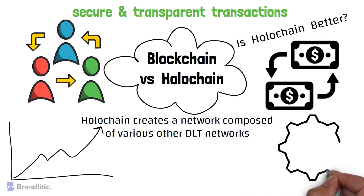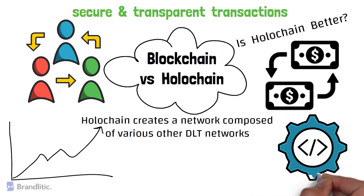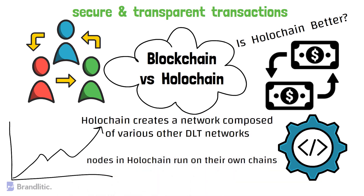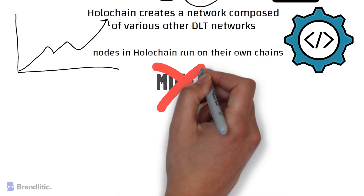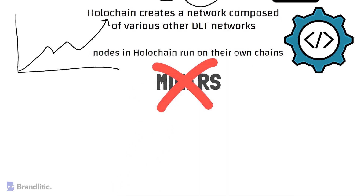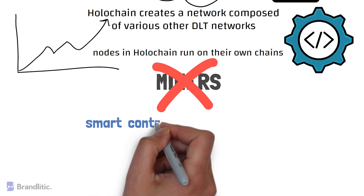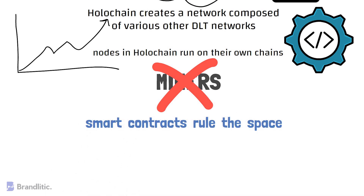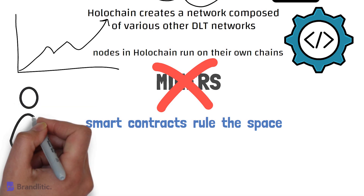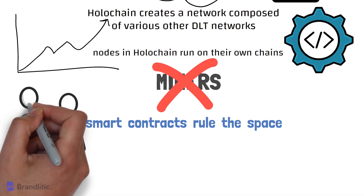On a blockchain network, nodes rely on a single network to initiate and validate transactions, so as more blocks join the chain, computational burden and fees multiply. On holochain, each node runs its own chain, providing much more room for computation. Because each node runs its own chain, there is no need for miners, transaction fees are almost non-existent, and rather than tokenization, smart contracts rule the space.